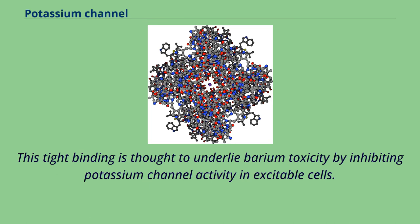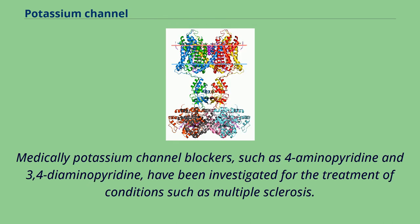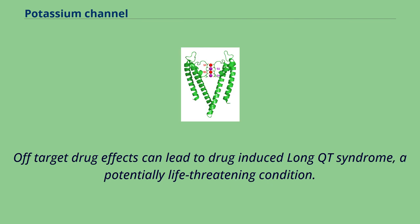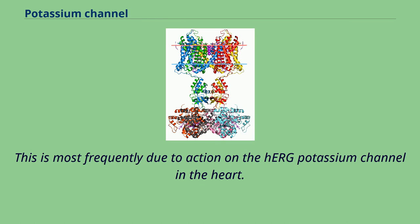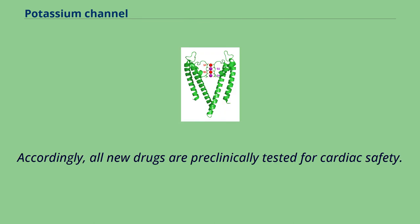This tight binding is thought to underlie barium toxicity by inhibiting potassium channel activity in excitable cells. Medically, potassium channel blockers such as 4-aminopyridine and 3,4-diaminopyridine have been investigated for the treatment of conditions such as multiple sclerosis. Off-target drug effects can lead to drug-induced long QT syndrome, a potentially life-threatening condition, most frequently due to action on the HERG potassium channel in the heart. Accordingly, all new drugs are pre-clinically tested for cardiac safety.